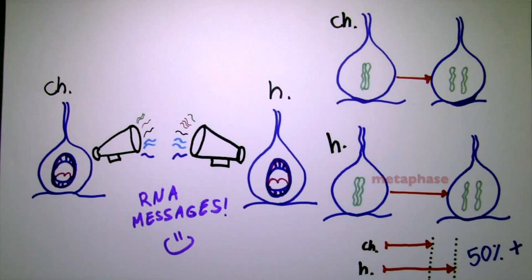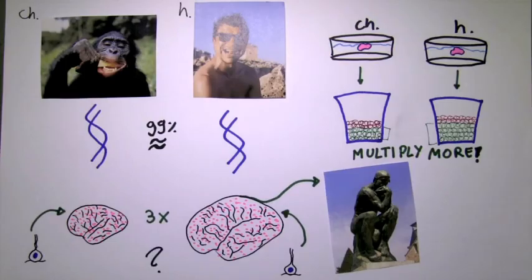But why would they need extra time? We don't know for sure, but brain stem cells that need to multiply more may use this time to make sure they are extra ready.